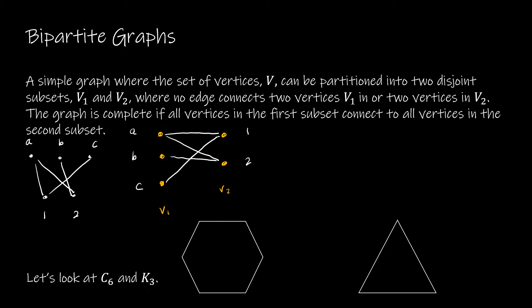If we have a complete bipartite graph, that's where all the vertices in one subset connect to all the vertices in the other subset. So connecting B to 1 and C to 2 makes every vertex adjacent to all vertices in the other set. We call this K_{3,2}, just like we used K for a complete graph, but now with two numbers representing the size of each subset — three and two.